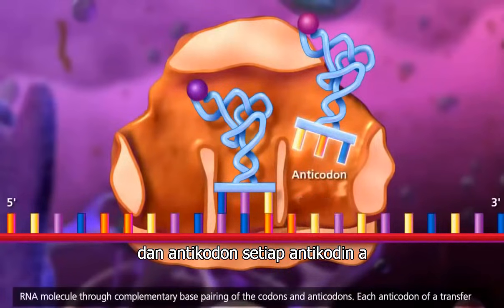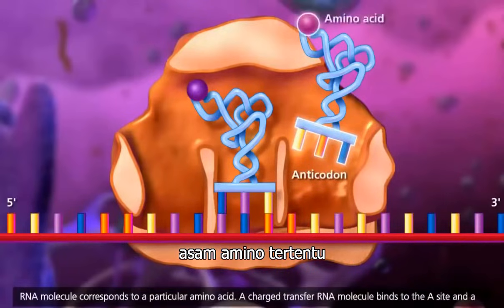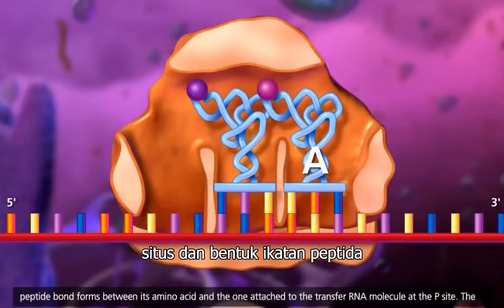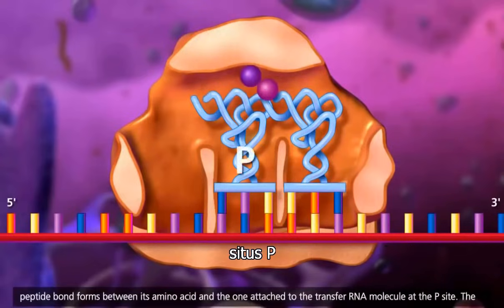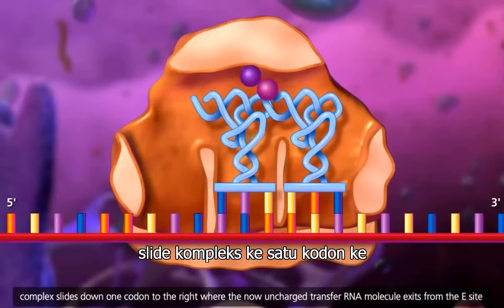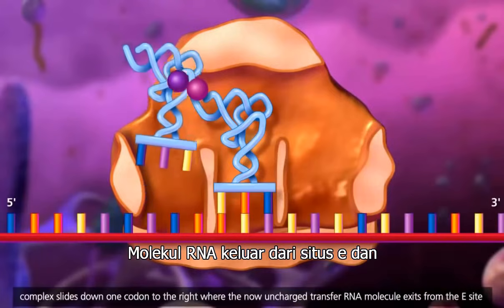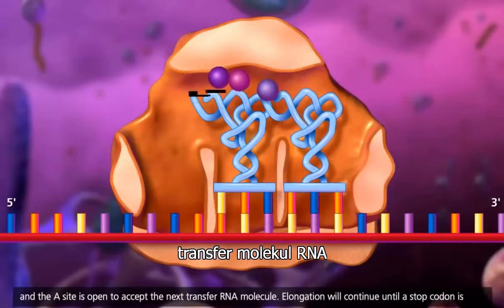Each anticodon of a transfer RNA molecule corresponds to a particular amino acid. A charged transfer RNA molecule binds to the A site and a peptide bond forms between its amino acid and the one attached to the transfer RNA molecule at the P site. The complex slides down one codon to the right, where the now uncharged transfer RNA molecule exits from the E site and the A site is open to accept the next transfer RNA molecule.